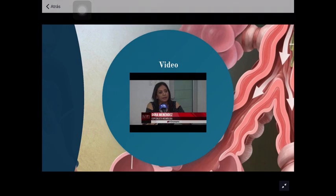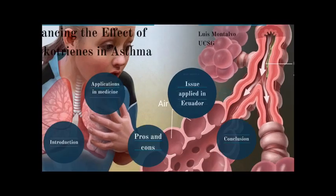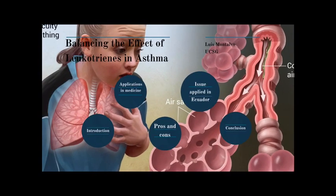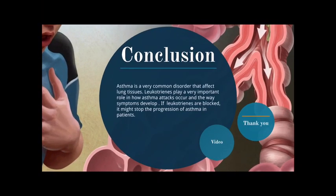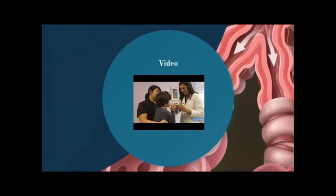Now let's finish with the conclusion. Asthma is a very common disorder that affects lung tissues. Leukotrienes play a very important role in how asthma attacks occur and the way symptoms develop. If these are blocked, it might stop the progression of asthma in patients. Before finishing, I would like you to watch a final video.